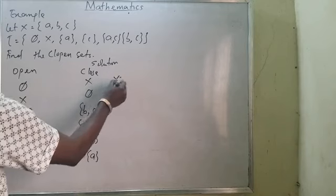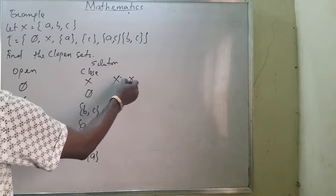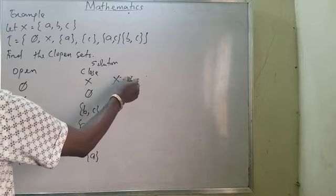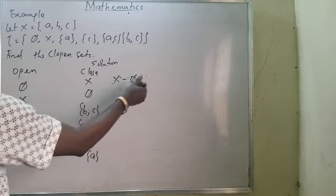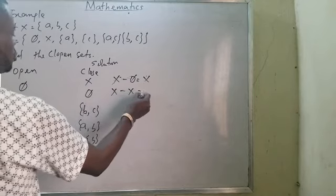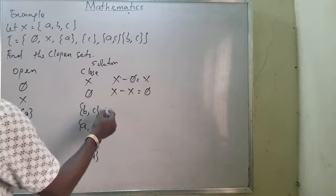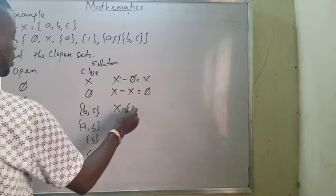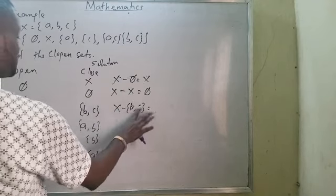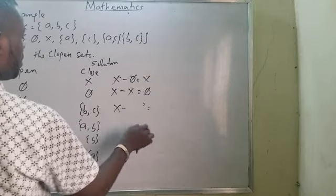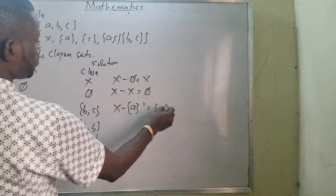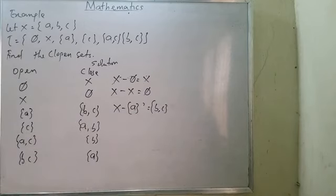For example: X minus X equals ∅, and X minus ∅ gives X. X minus {B, C} equals {A}. X minus {A} equals {B, C}. And so on and so forth. By computing each complement, we generate all the closed sets.